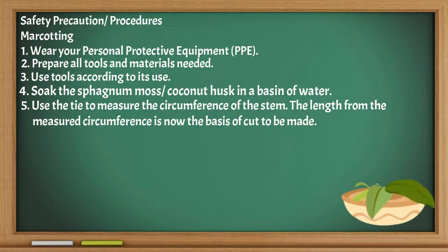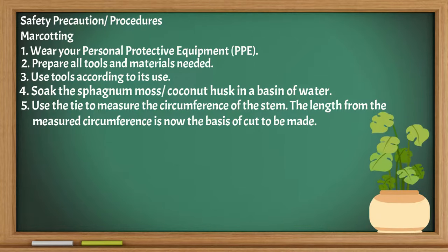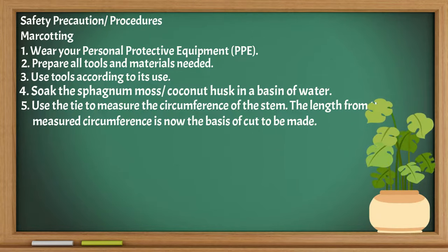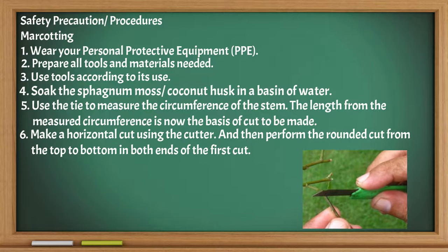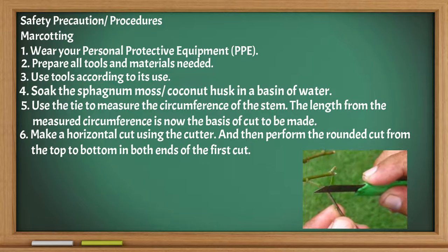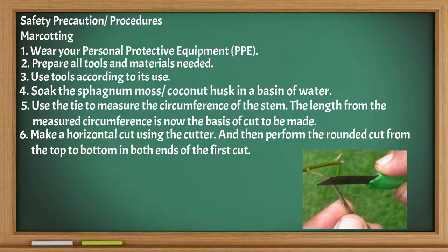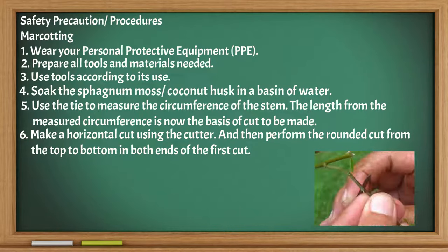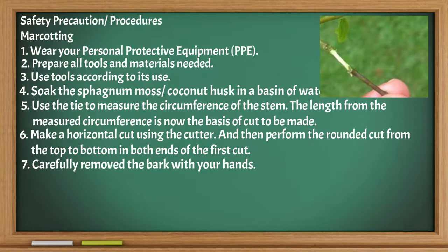Use a tie to measure the circumference of the stem. The length from the measured circumference is now the basis of the cut to be made. Make a horizontal cut using the cutter, and then perform a rounded cut from the top to bottom on both ends of the first cut.